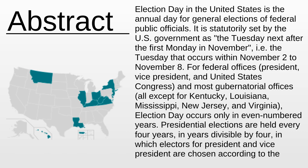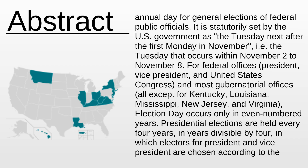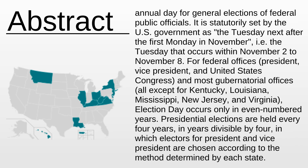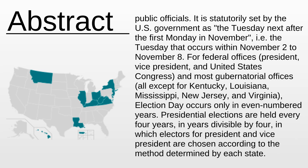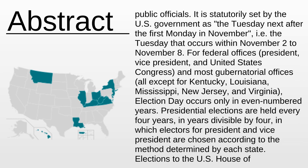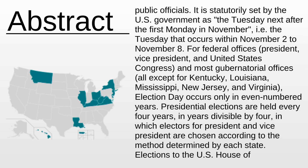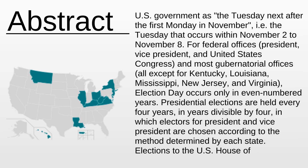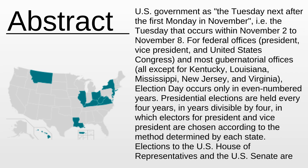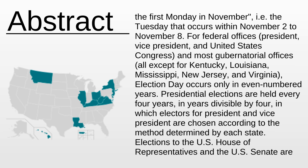Election Day in the United States is the annual day for general elections of federal public officials. It is statutorily set by the U.S. government as the Tuesday next after the first Monday in November, i.e. the Tuesday that occurs within November 2 to November 8.